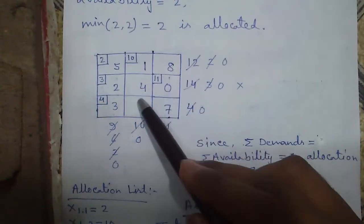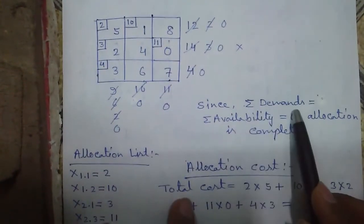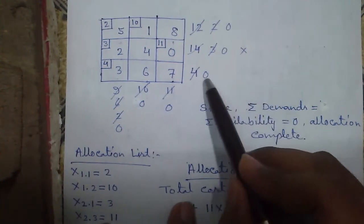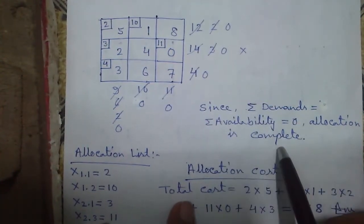This is our final allocation table which is optional. Since the total demands 0 plus 0 plus 0 equals to total availability 0 plus 0 plus 0, all are 0, so allocation is complete.